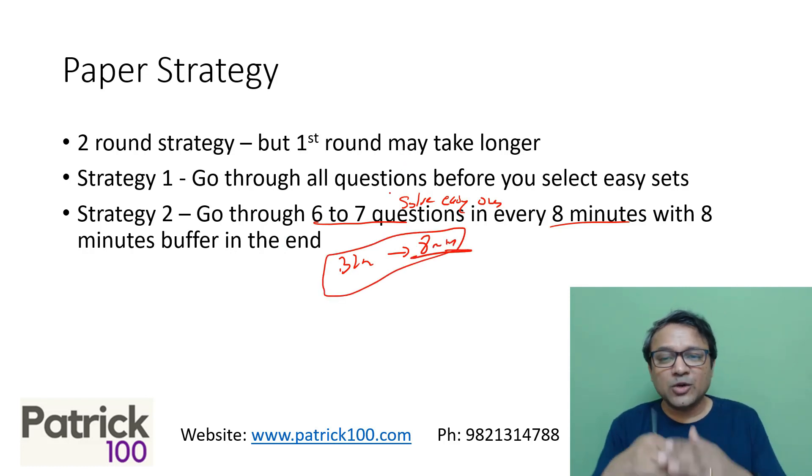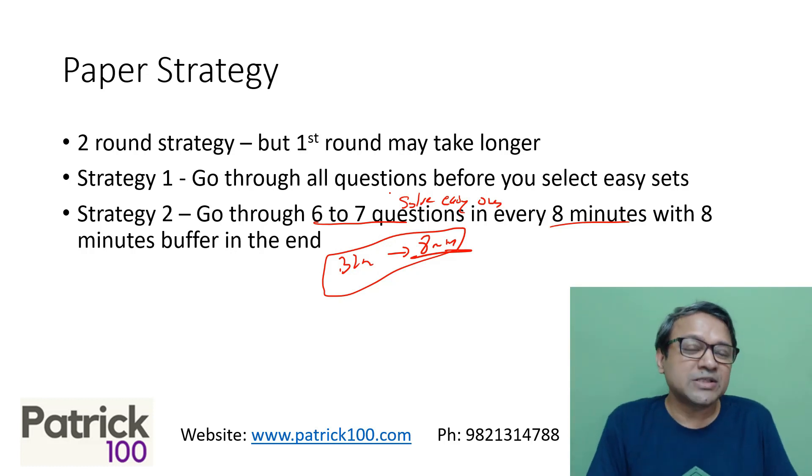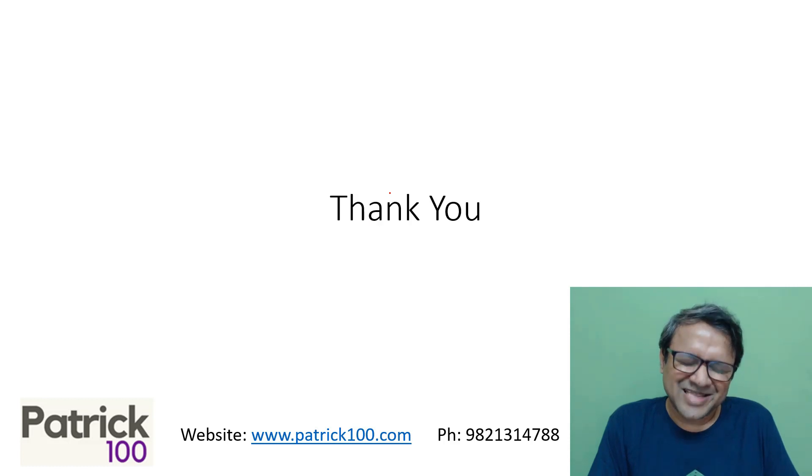As I said, first round would be to go through all the questions, solve the easy ones - whichever you get as easy, solve it - and then come back to the second round. Or keep a time limit of 6 to 7 questions for every 8 minutes and try to solve. Either of the strategies will do. Thank you.